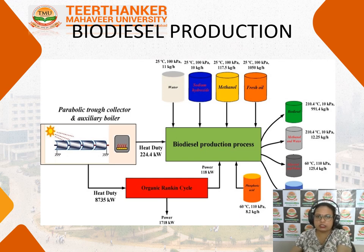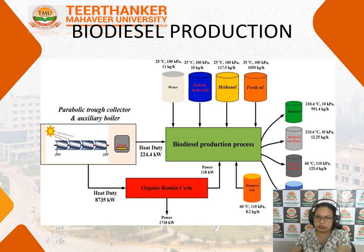The materials required for biodiesel production are water, methanol, fresh oil, and a catalyst. After the transesterification reaction, biodiesel is produced, methanol is recovered, the catalyst is recovered, and glycerol is the by-product produced along with the biodiesel.